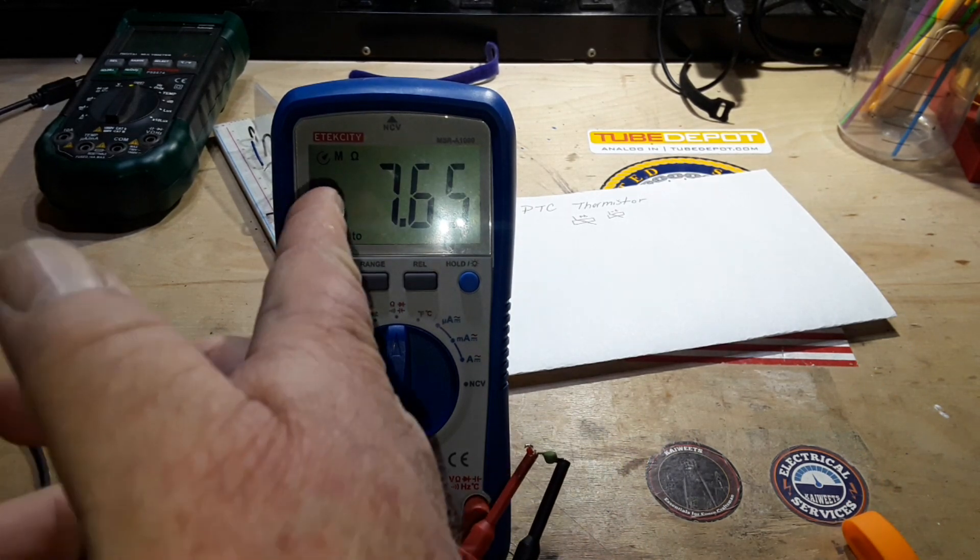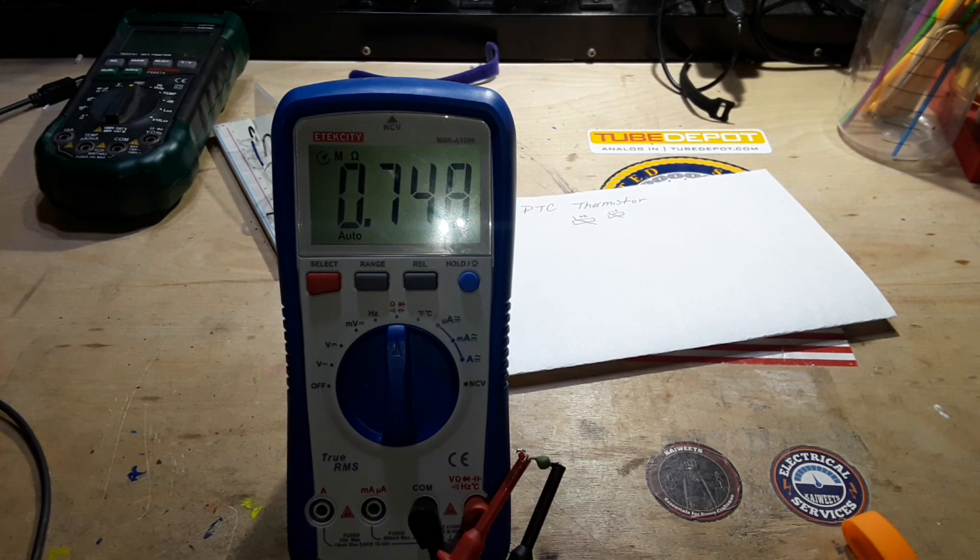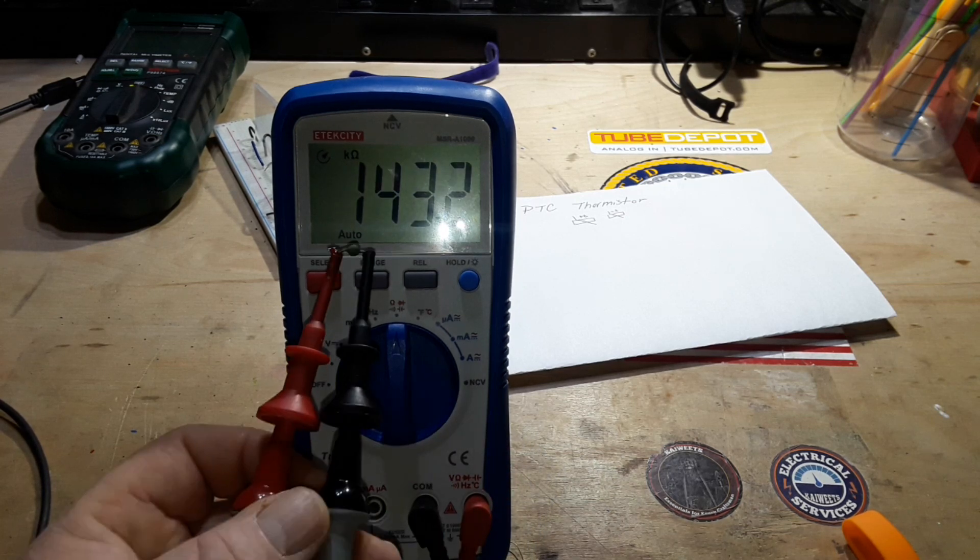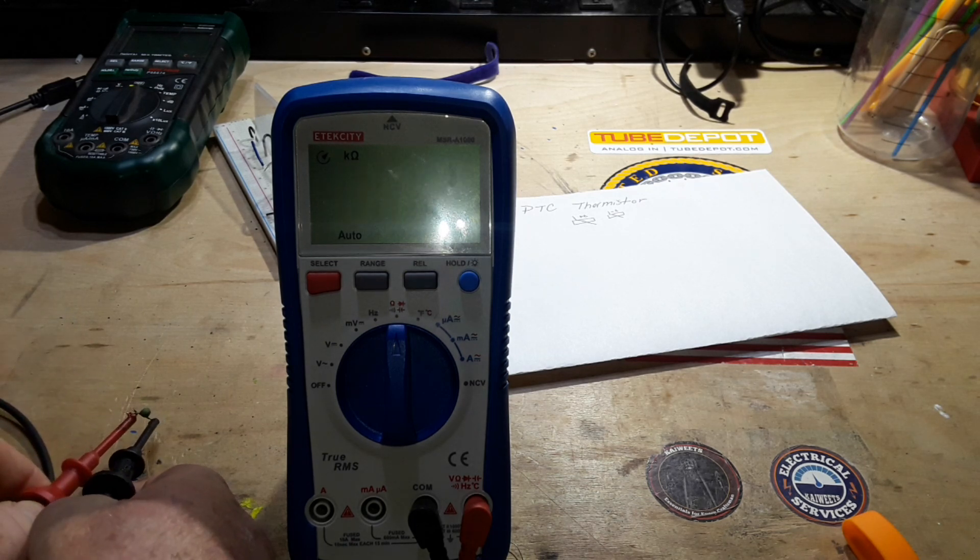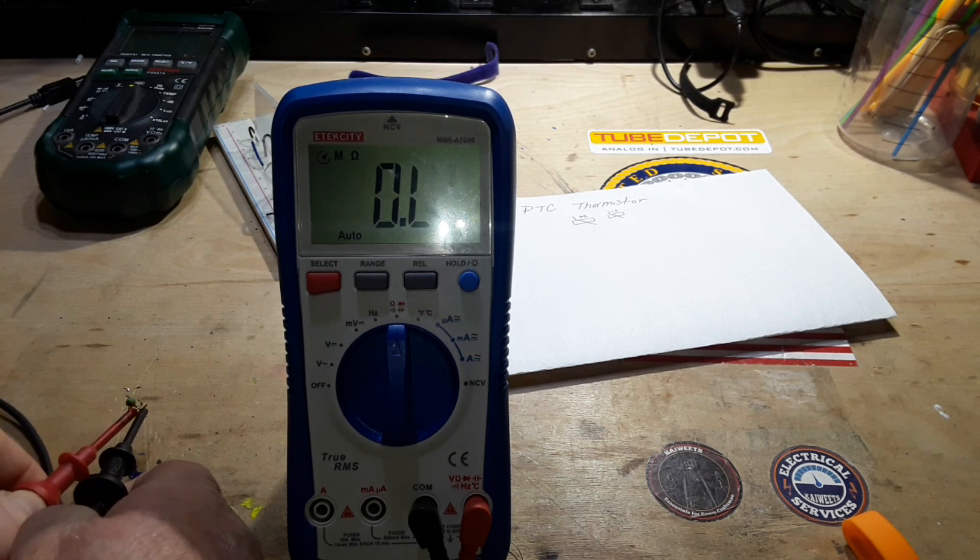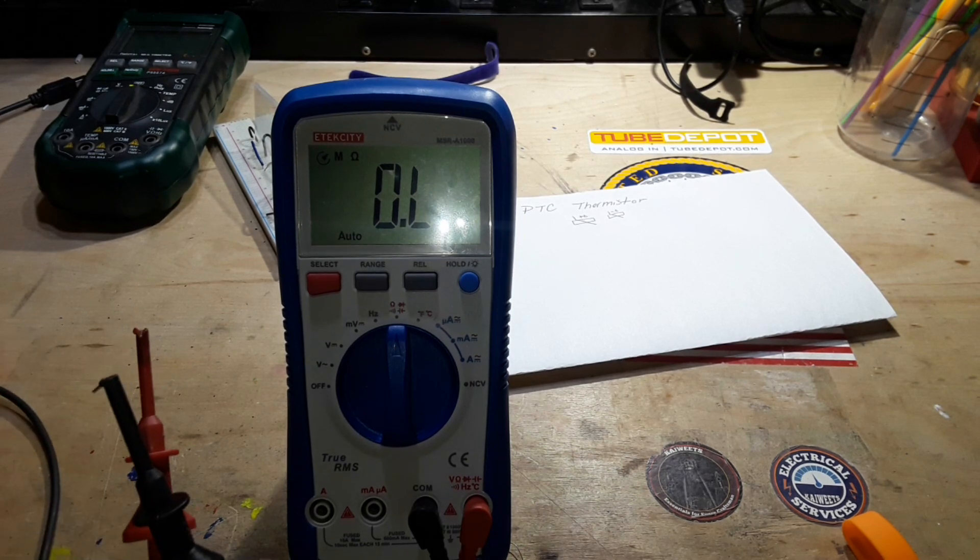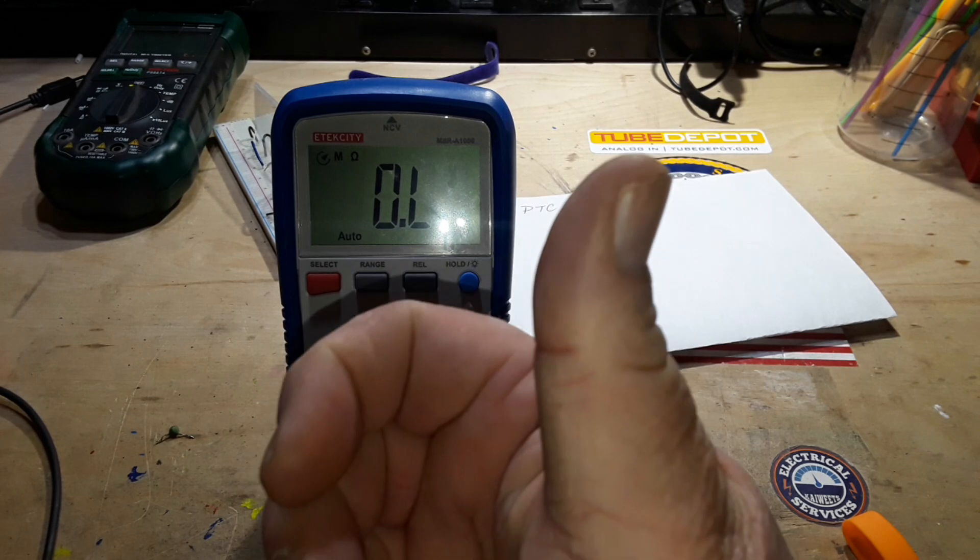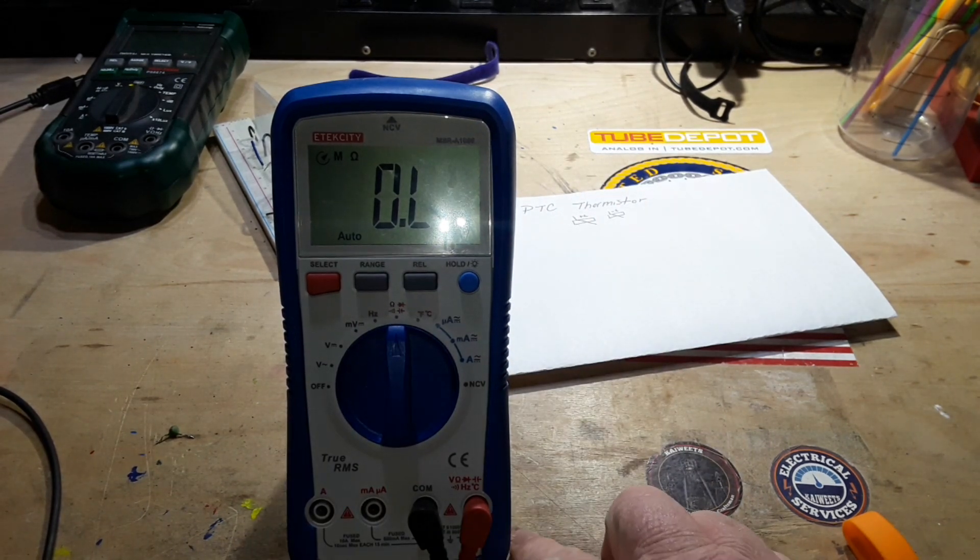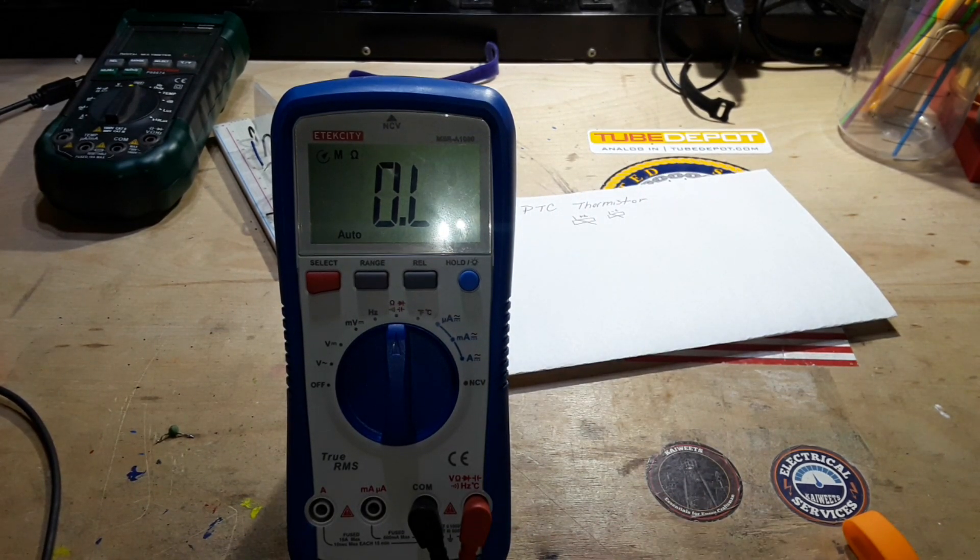The temperature rises up into the megaohm range. And then it goes crazy while it is cooling down and resetting. And what's happening is, it's reached a temperature called the Curie temperature. And when it reaches that point with the PTC, the resistance just goes exponentially through the roof.